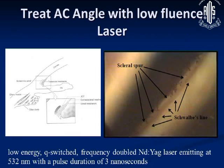Selective laser trabeculoplasty means that we are treating the angle of the anterior chamber with some kind of laser. We have been doing it with argon laser trabeculoplasty earlier, but now we have another laser which is much less disruptive, much more gentle and milder. It doesn't leave behind any physical damage. That's called selective laser trabeculoplasty — a very low-fluence laser, a YAG laser at 532 nanometers with a very small pulse of three nanoseconds or so.